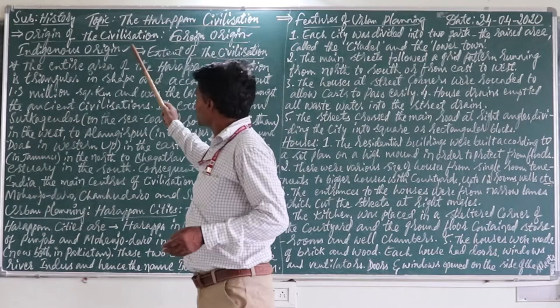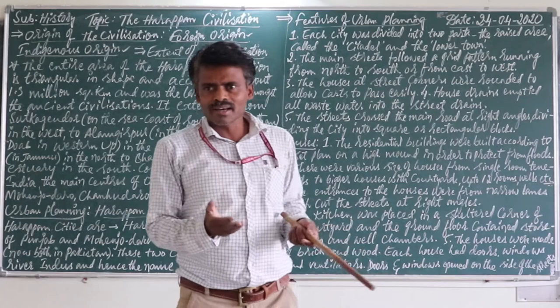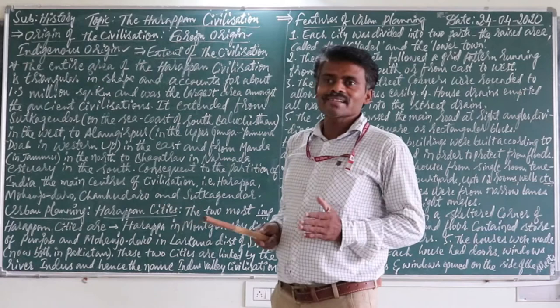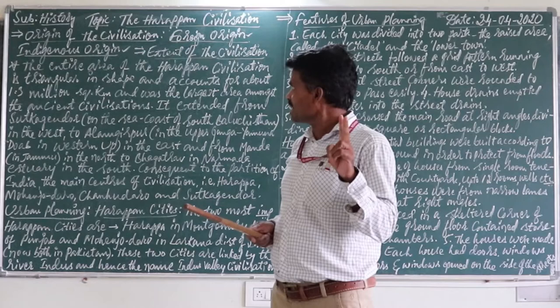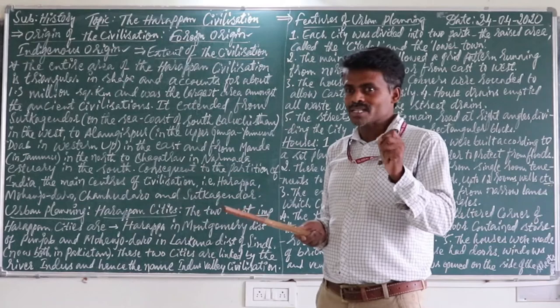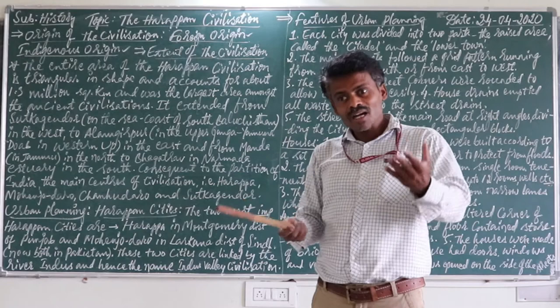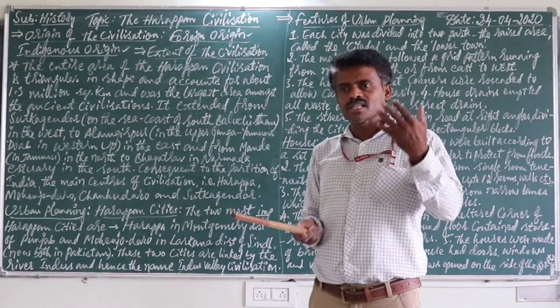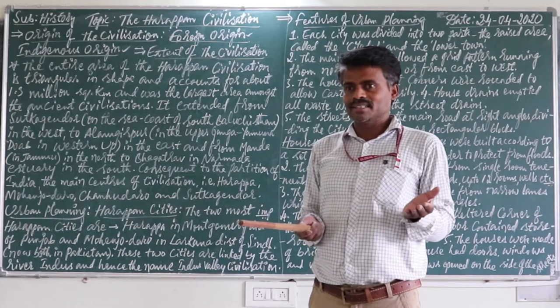There are two types of origins. One is foreign origin and the other is indigenous origin. Foreign origin means that which does not belong to our country — when sources or the civilization came from another country apart from our own, that is called foreign origin.